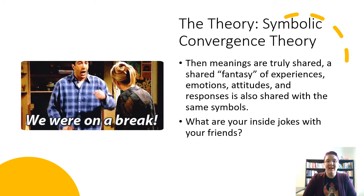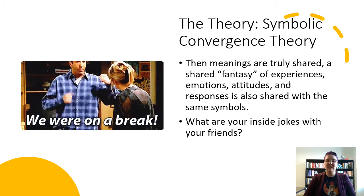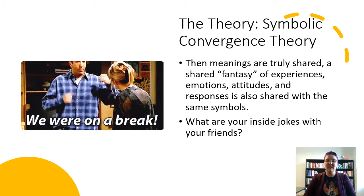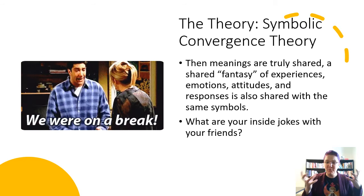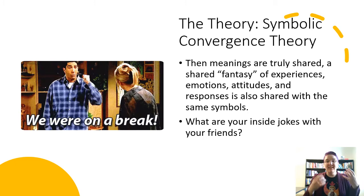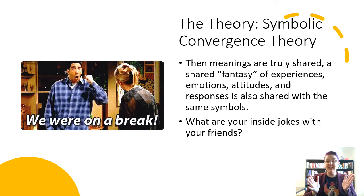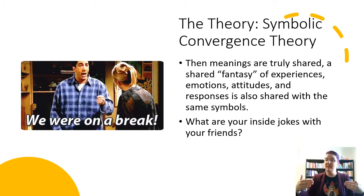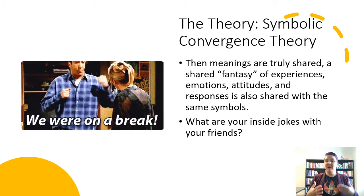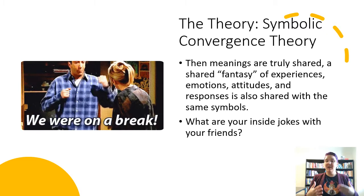The final step is that meanings, if they are truly shared — a fantasy of experiences, emotions, attitudes and responses — can be shared with the same symbols. There's no better example than Ross articulating, 'But we were on a break.' That became such a theme in the TV show Friends that all you needed were those words to pull people's attention to the entire shared experience: their emotions supporting Ross or Rachel, their attitudes about relationships and cheating, and to bring about a shared communal fantasy and response.